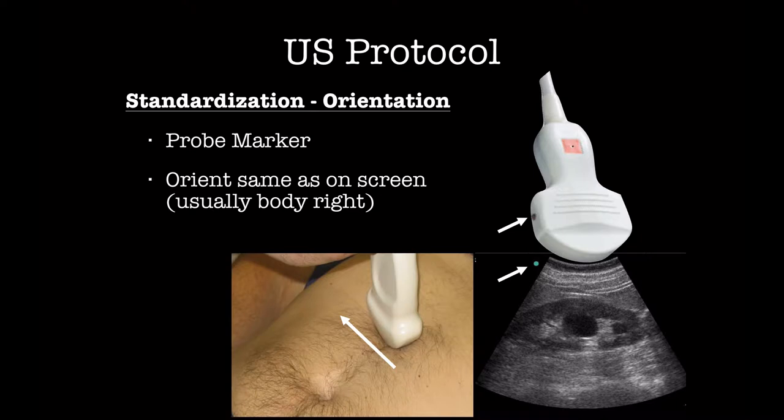We're also going to talk about image orientation. What that means is the things on the left side of the screen should be on the right side of the patient. As you're ultrasounding someone, you need to know if you see something on one side of the screen, what side of the patient it's on. By convention, this little marker on every probe — when you're ultrasounding someone — should be either facing the patient's right or facing their head. That way the image on the screen always looks the same. The ultrasound beam comes straight down the probe, so orient the probe always towards the right or towards the head.